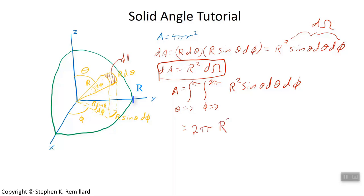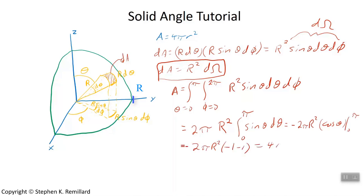Pull out the r squared. It's not being integrated over. And you just have the integral of sine theta d theta from 0 to pi, which you immediately recognize as minus cosine. You have 4 pi r squared as the area of a sphere, which we found by integrating the differential solid angle. So you can kind of think of solid angle as the area that you have when the radius equals 1, in units of whatever the radius is squared.